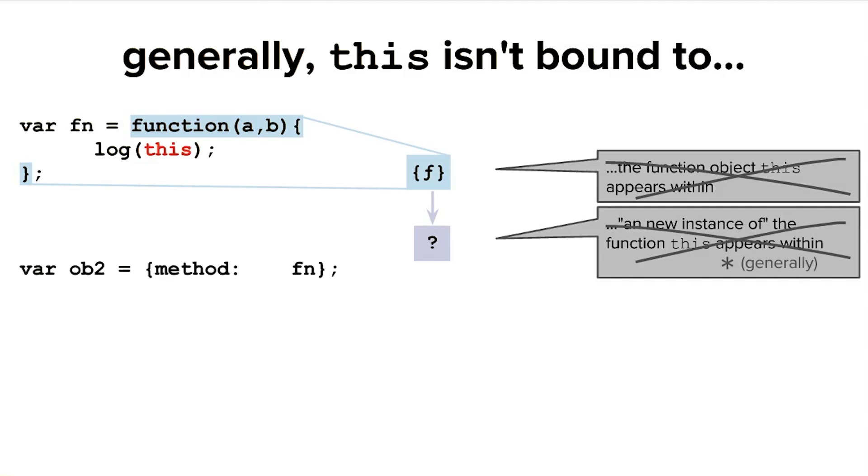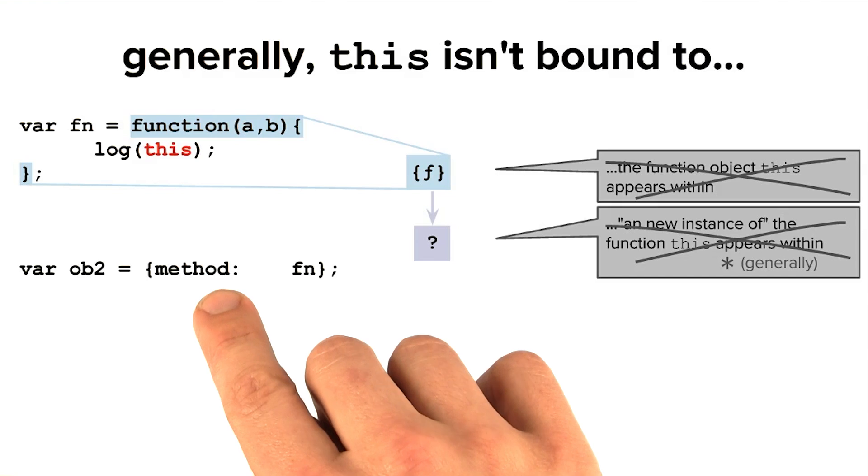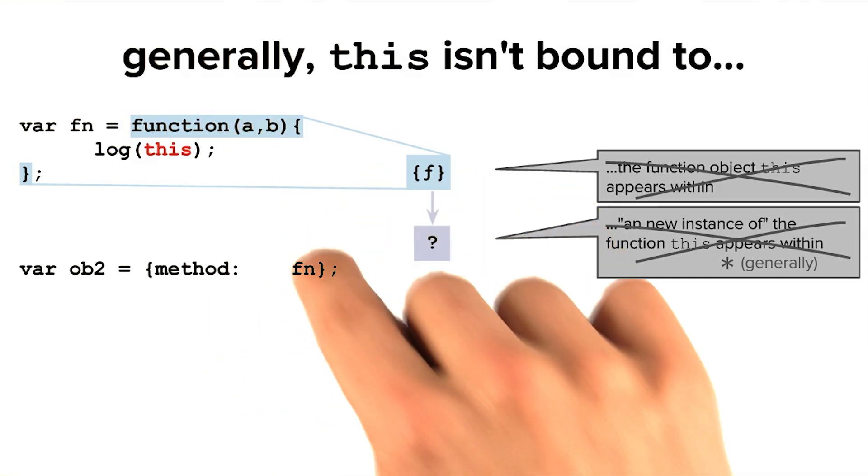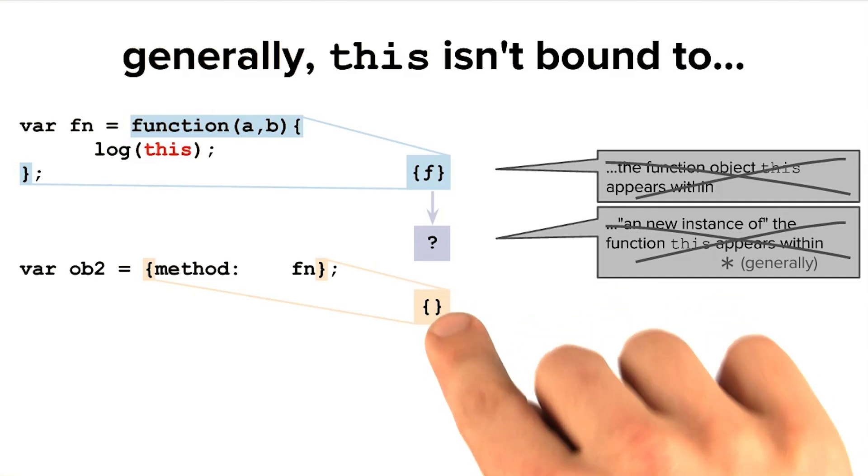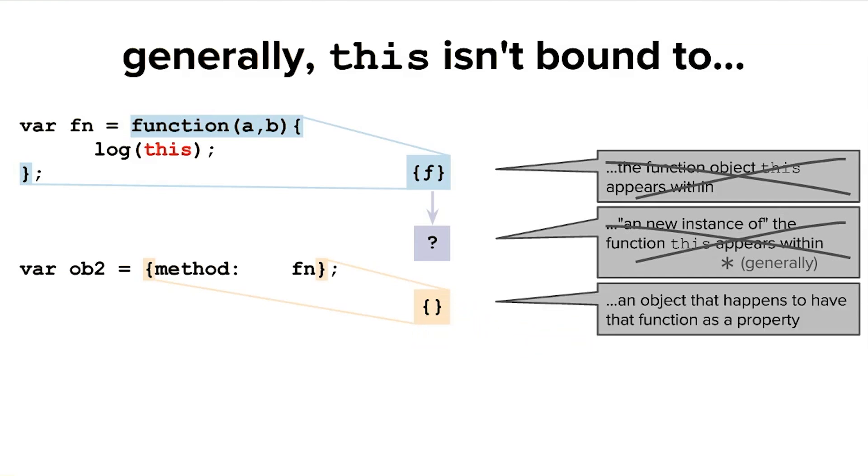You might then think that in order for the keyword this to mean anything, it must be in a function that is contained within some other object as a property. Here we have an object ob2 that has a method called method that stores a reference to that same function object. So, that object creates an object in memory. And maybe that in-memory object where the function is a property would be the thing that the keyword this refers to.